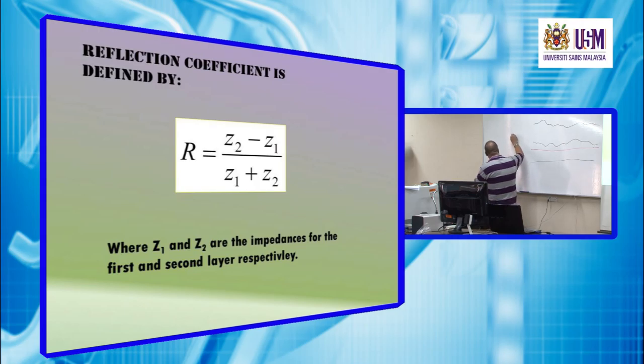If the percentage of energy that will be reflected is R, then the transmission energy will be 1 minus R. So we have 100%. We understand that 70% will be reflected, then only 30% will be transmitted. So we should use our tools. Do not depend only on memorizing, but you have to think.